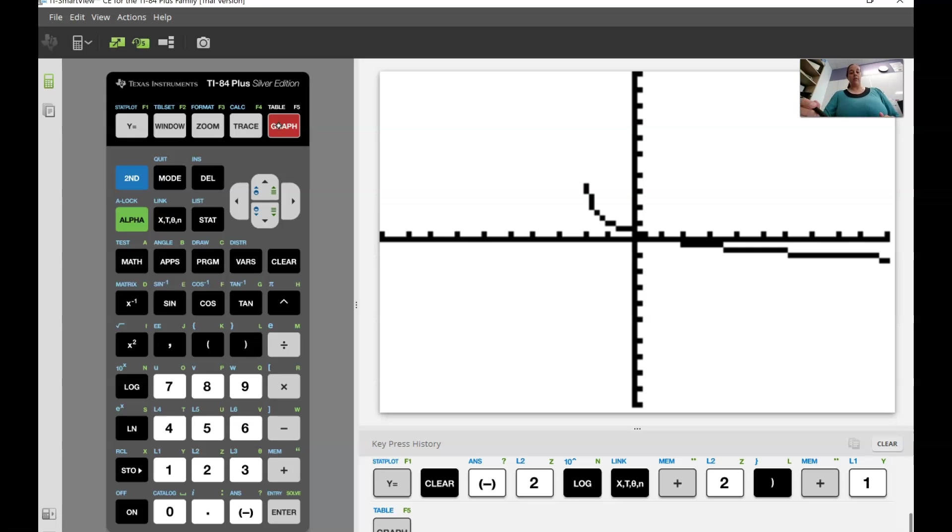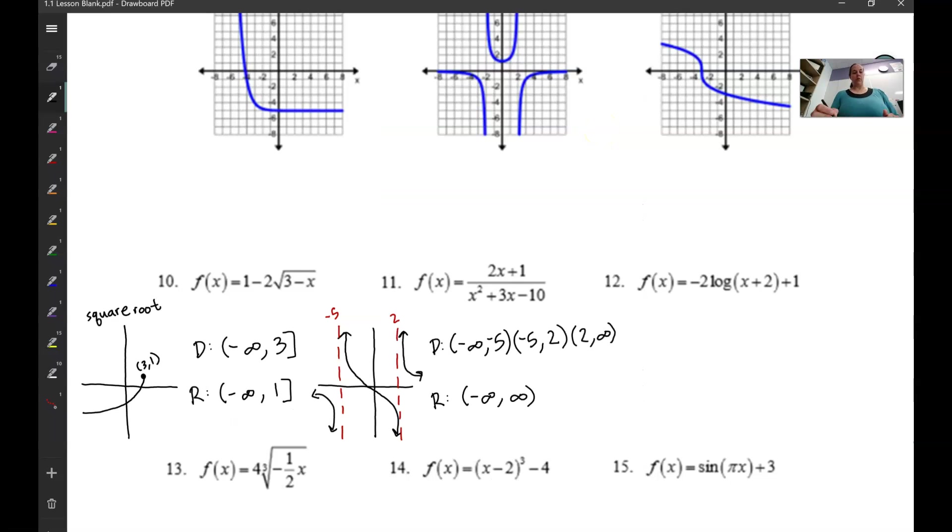Now, you might get this one confused with a root because it looks like it ends right there. But if we looked at our equation, this is not a square root. There's no square root in the equation. This is a logarithm. Logarithms have one asymptote that they go up to that asymptote. So even though our graphing calculator isn't showing it, if you were to graph this on like desmos.com or whatever, you would see that there is an asymptote right here at negative 2, that it continues up and gets closer and closer to that, but doesn't touch it. So we go back here, we're going to sketch this with something like that, draw in our asymptote like that, negative 2.